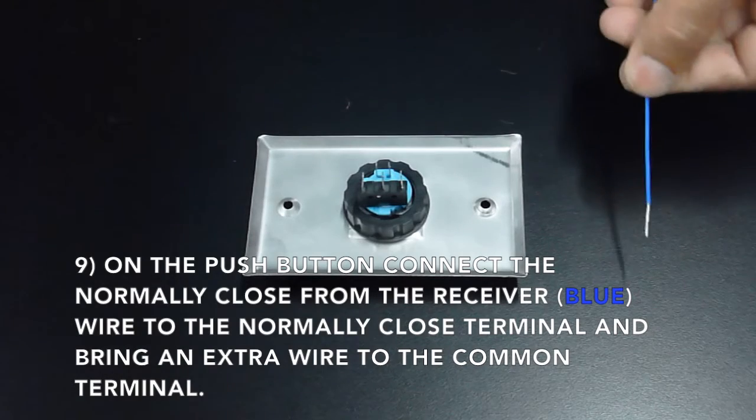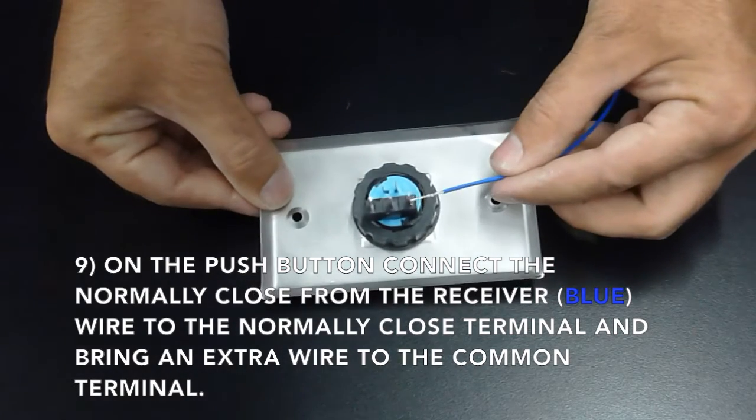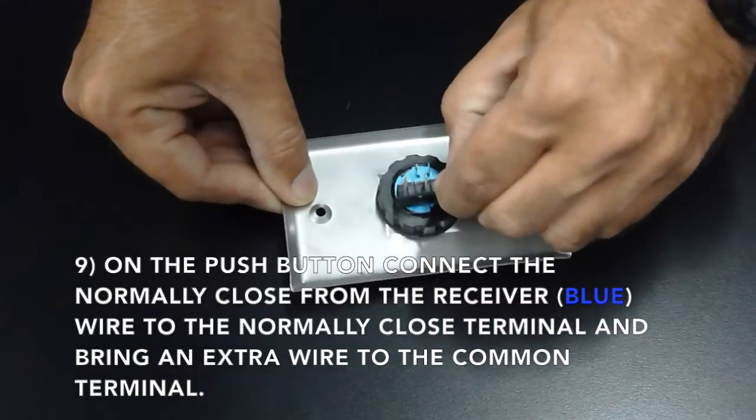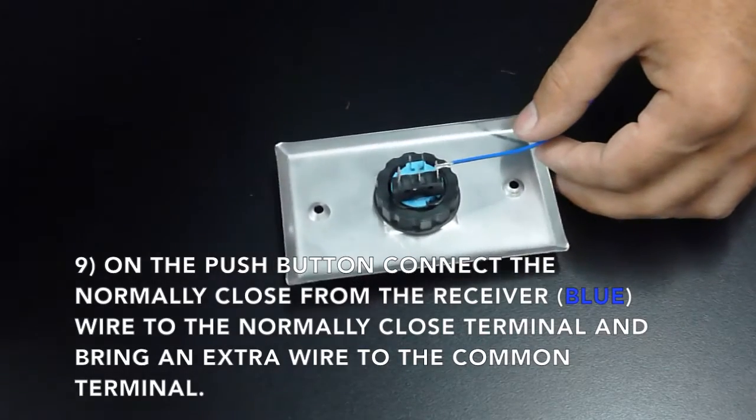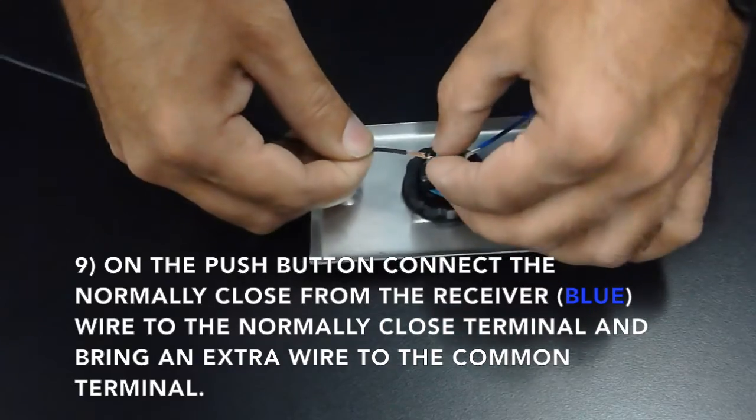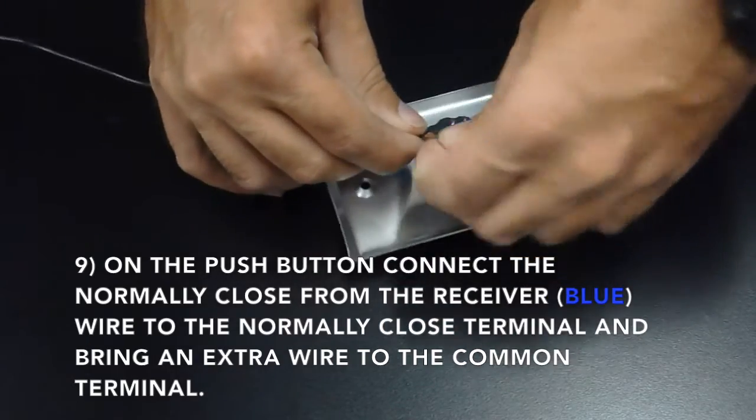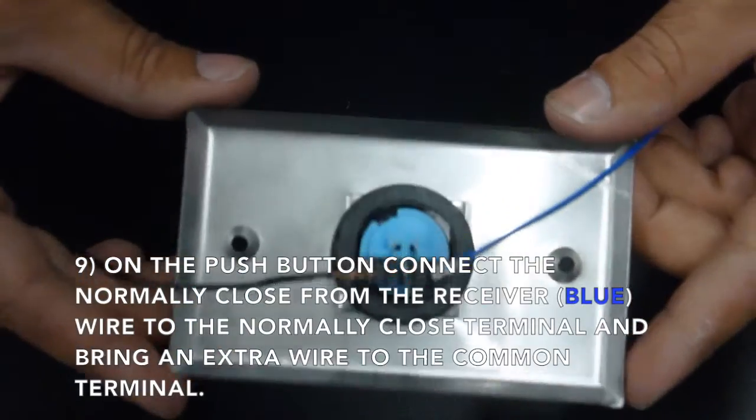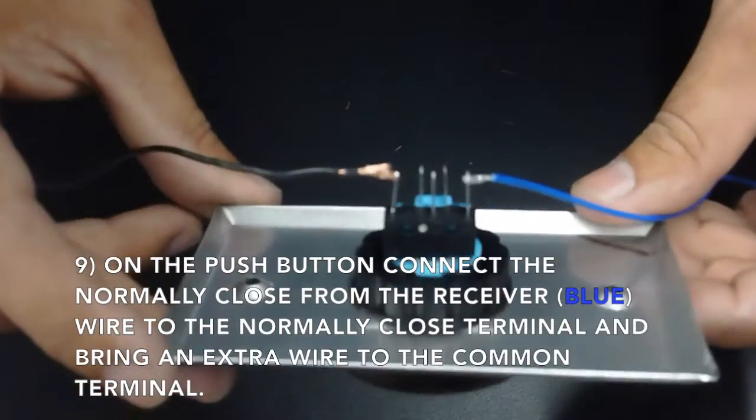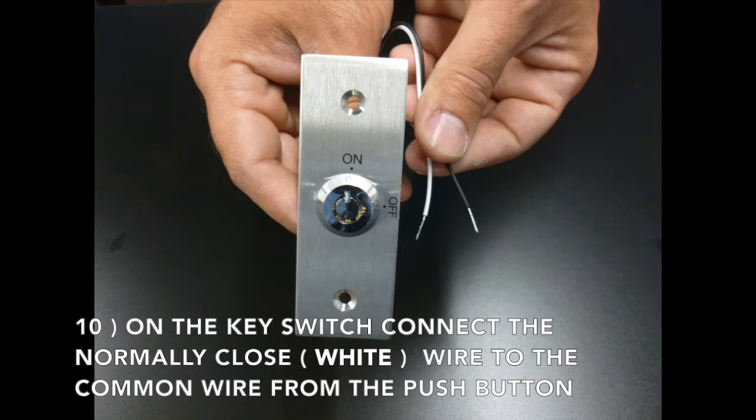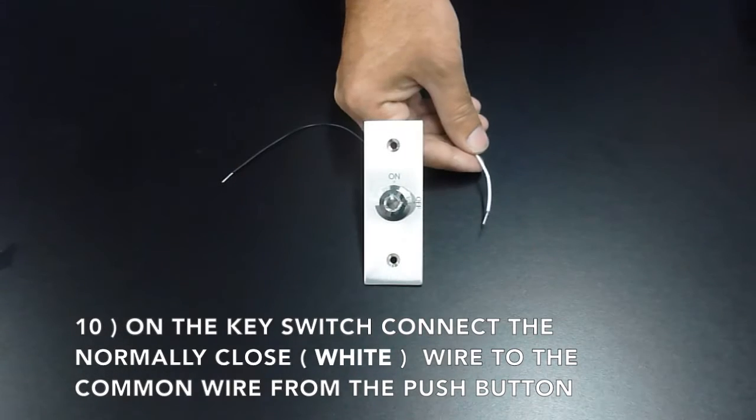On the push button, connect the normally closed from the receiver, which is the blue wire, to the normally closed terminal. Connect the other wire to the terminal and bring an extra wire to the common terminal. Now connect the white wire to the common wire from the push button.